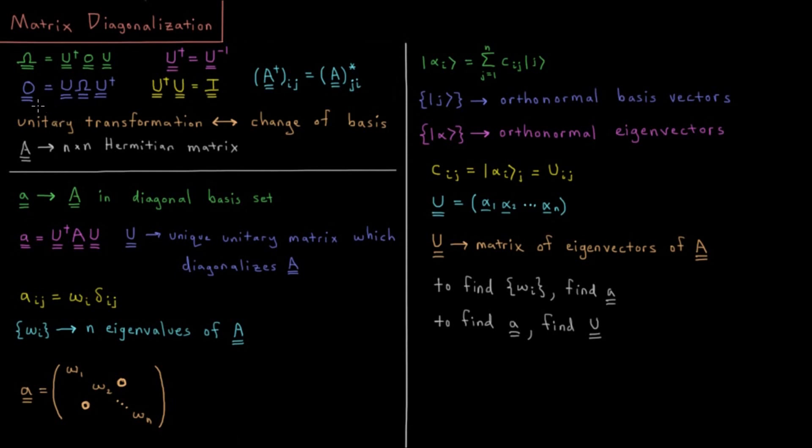We've discussed how we can have an operator which is represented in a given basis set of a bunch of different basis vectors. So what transforms a matrix from one basis set to another is what's called a unitary transformation, which is a change of basis.